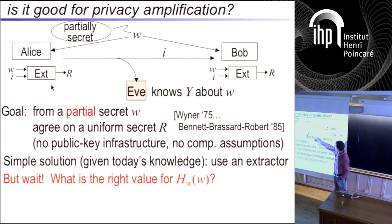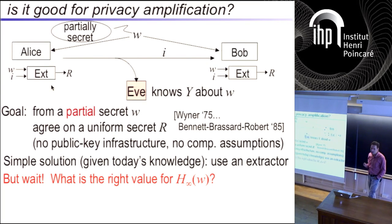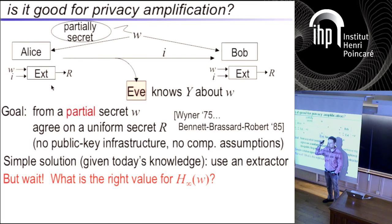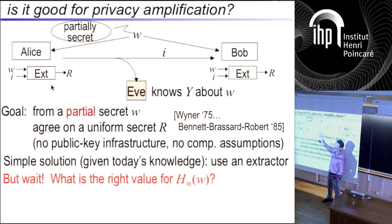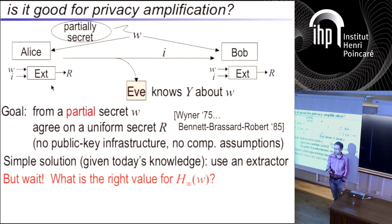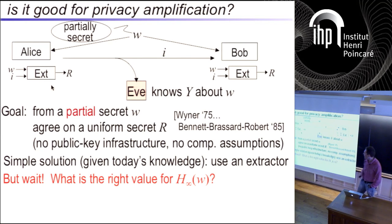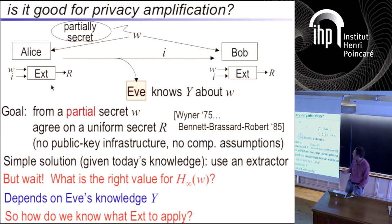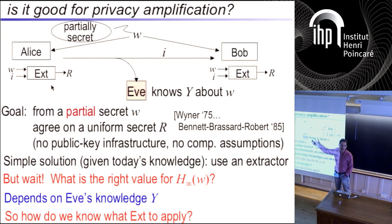If Eve knows something about the string, we can still kick her out. But what is the right value? We started with a uniformly random string W — so it was perfectly good. But then maybe Eve learned, let's say, its Hamming weight. How many bits of min-entropy are there now? If the Hamming weight is zero, there's no entropy left — you know exactly what the string is. So it depends on the specific knowledge she has.